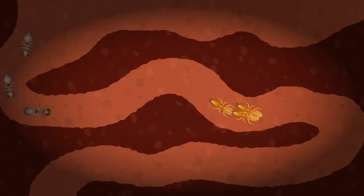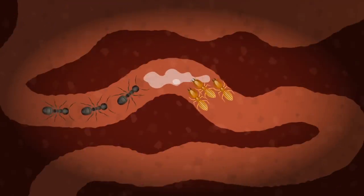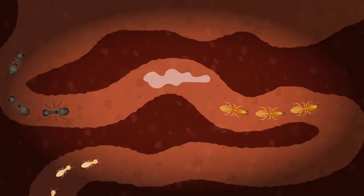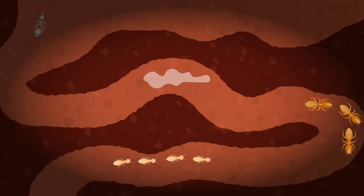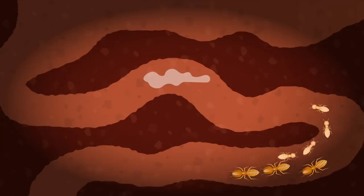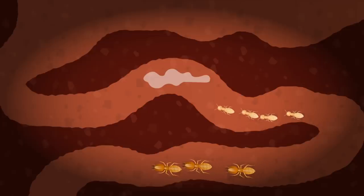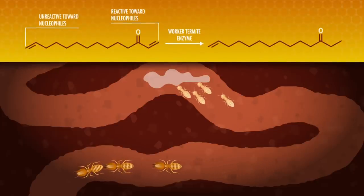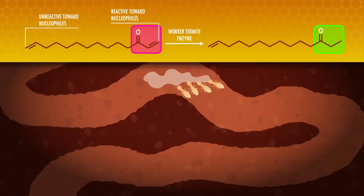Soldier termites, for example, defend their nests by secreting a toxic chemical that wards off invaders just fine, but when they use these chemical weapons, they have to make sure they don't also hurt their own nestmates. Turns out, the worker termites in the nest have an enzyme that allows them to reduce the chemical from its toxic form to another harmless form. And in this reaction, only the double bond that is conjugated with the carbonyl is reduced.